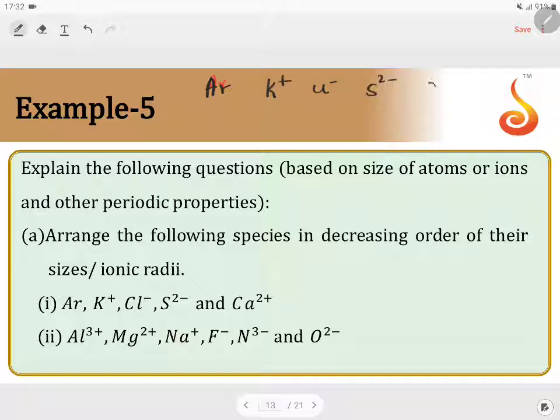Ar, K+, Cl-, S2-, Ca2+. Atomic number or the number of protons is equal to 18, 19, 17, 16, 20. If you count the number of electrons, it's 18, 18, 18, 18, 18. In all the cases, they are of 18 electrons. Therefore, the deciding factor is the proton.